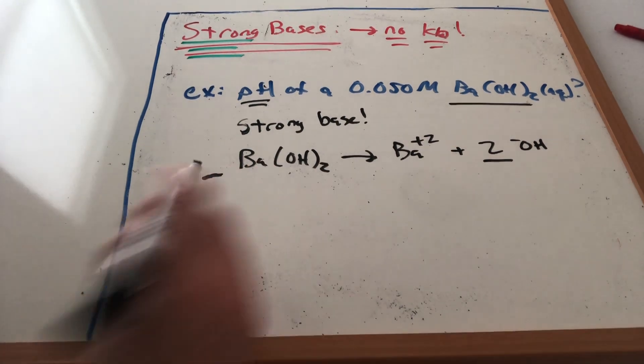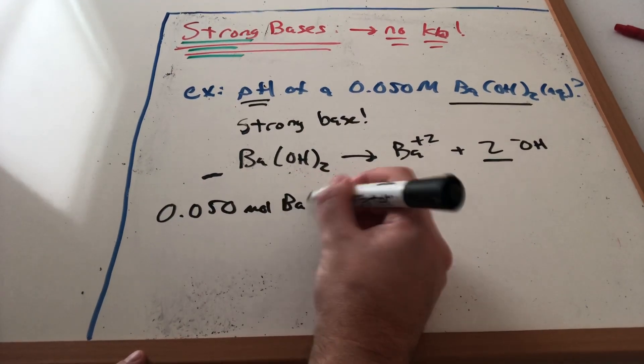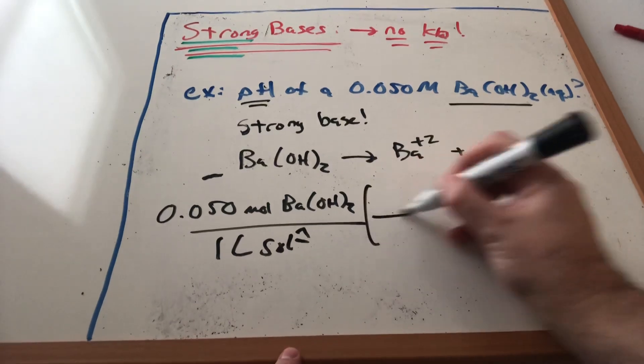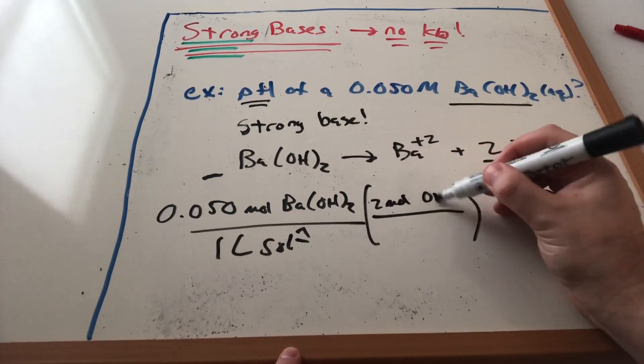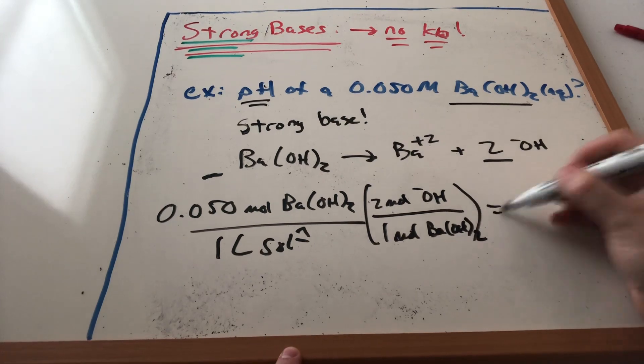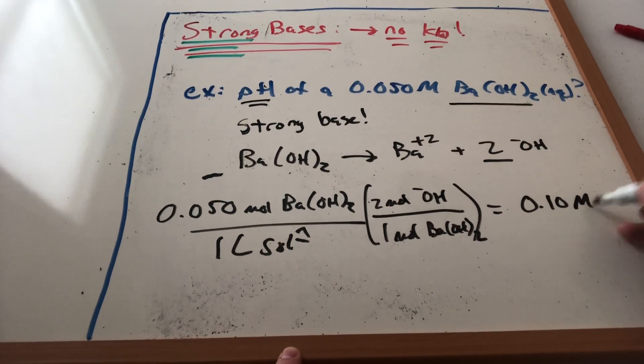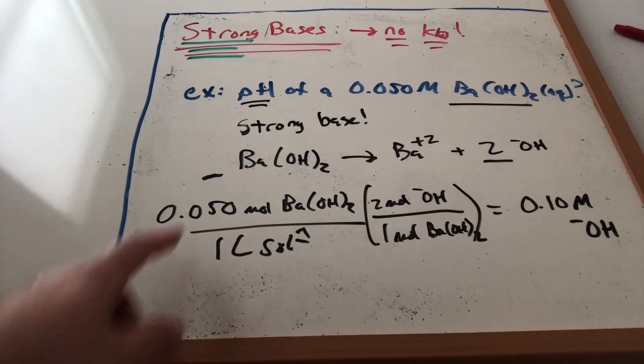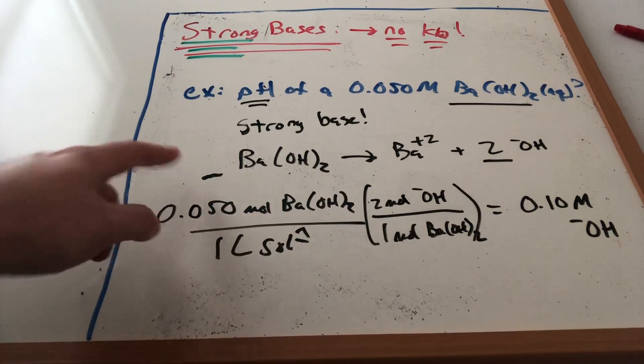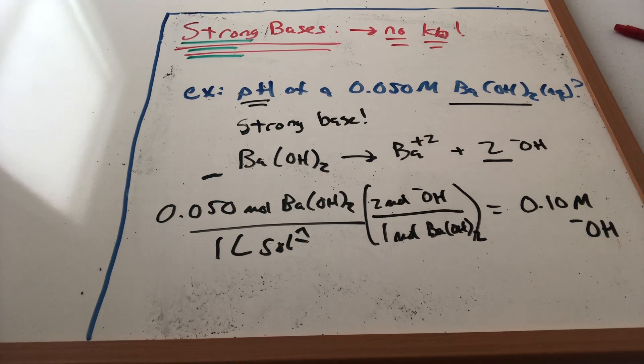So I need OH- concentration. I have 0.050 moles of Ba(OH)2 in one liter of solution. Based off of my dissolution, there's two moles of OH- for every one mole of Ba(OH)2. So that means the liters is going to stay in the bottom, I'm going to multiply this by two. What I have in solution is 0.10 molar OH-. It's just a simple mole to mole relationship that then tells me how much OH- is produced. This makes sense - I get double the OH- because every one of these produces two OH-. So this is the concentration of OH-.